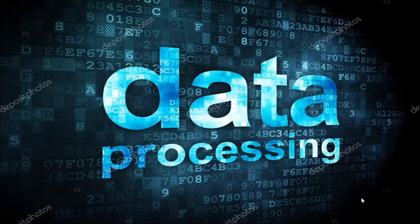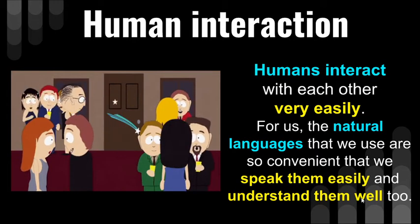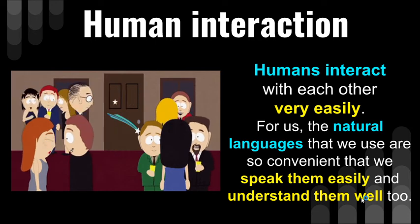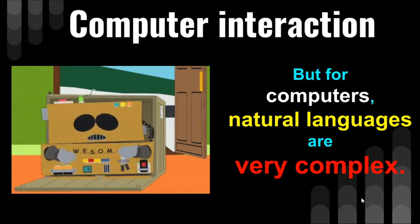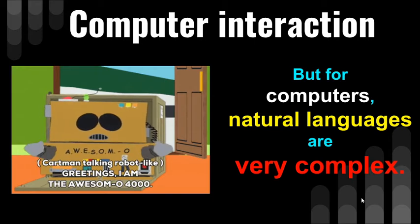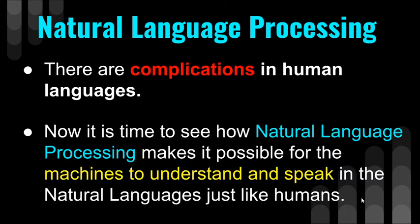Now we need to get into detail of data processing. First, look at human interaction. Humans interact with each other very easily. Natural languages are so convenient for us that we speak and understand them well as they are our mother tongue. But for computers, natural languages are very complex. We have already discussed complexities like complicated grammar and syntax, multiple meaning words, and perfect syntax but no meaning. Now it is time to see how NLP makes it possible for machines to understand and speak in natural languages just like humans.